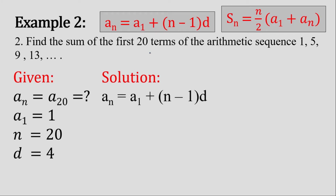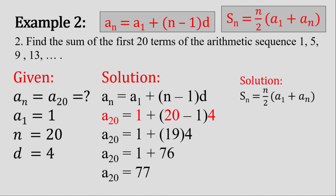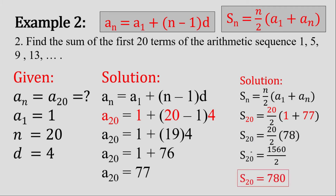For our solution, let's use the formula of the arithmetic sequence and substitute all the values. After simplifying, we get the value of 77 for a sub 20. Now we have a sub 20 and a sub 1, so we can compute the sum of the first 20 terms. Using the arithmetic series formula and substituting all values, we simplify and get the answer of 780 as the sum of the first 20 terms.